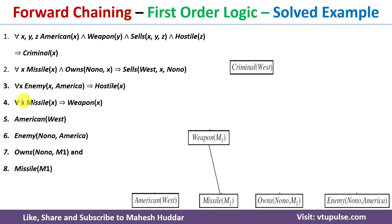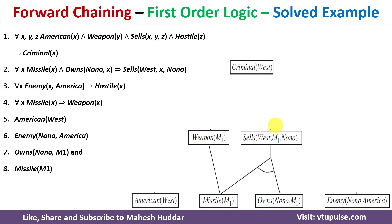Considering the second rule: if X is a missile and X is owned by Nono, then West has sold X to Nono. We know M1 is a missile — that is 100% true — and M1 is owned by Nono. Therefore, we conclude that West has sold missile M1 to Nono.